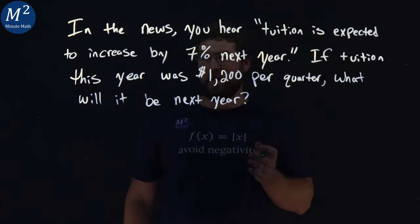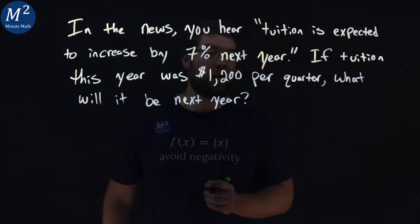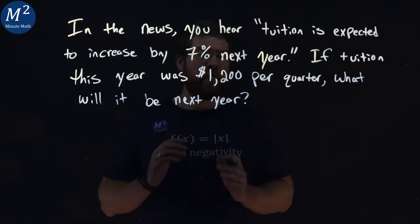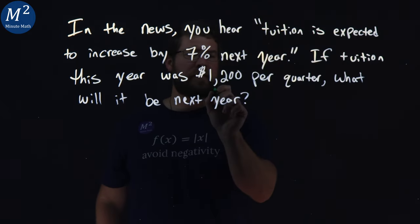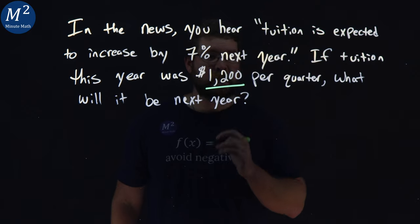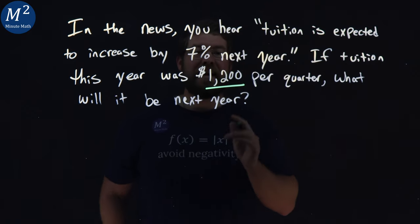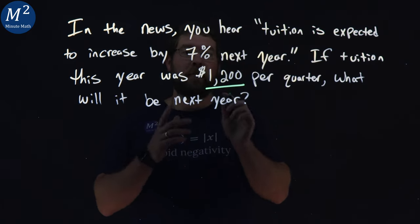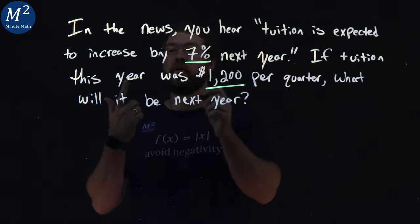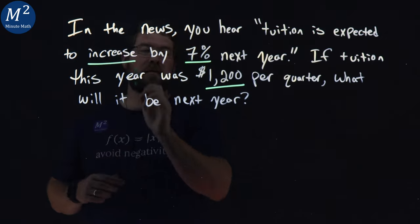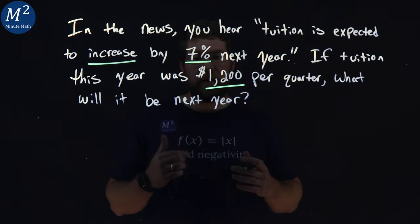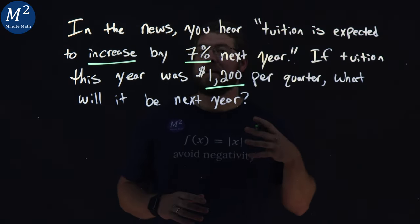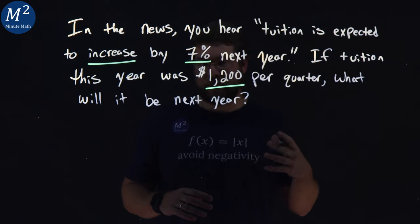Wouldn't that be nice? Only $1,200 per quarter. Let's note a few important things: $1,200 per quarter is the cost for this year, and we're having a 7% increase next year. So we want to find what the new cost per quarter is next year.